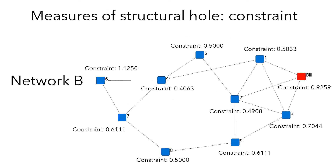Now let's look at network B. Who has the highest constraint? Node 6. Node 6 is trapped between node 4 and 7, which is why node 6 has the highest value of constraint. Who has the second highest value of constraint? Bill. Bill's information source is also limited — Bill is constrained in the cluster that includes node 1, 2, and 3. Who plays the strongest brokerage role in the network? Node 4. Node 4 has four ties and is connected to node 1, 2, 6, and 7, so each contact of node 4 is likely to bring in different information.